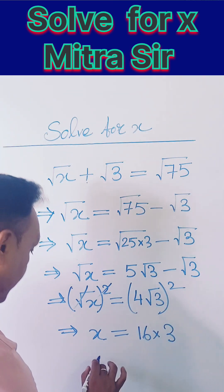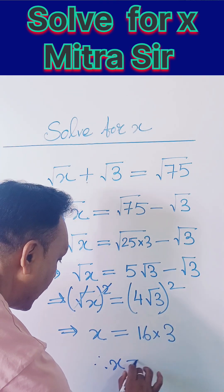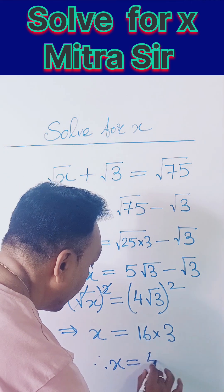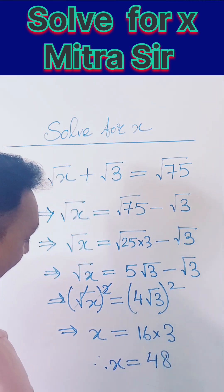And the square of √3 gives you 3 only. So therefore, if you multiply 16 and 3, that gives you 48. That is the value of x, so x equals 48 is the answer.